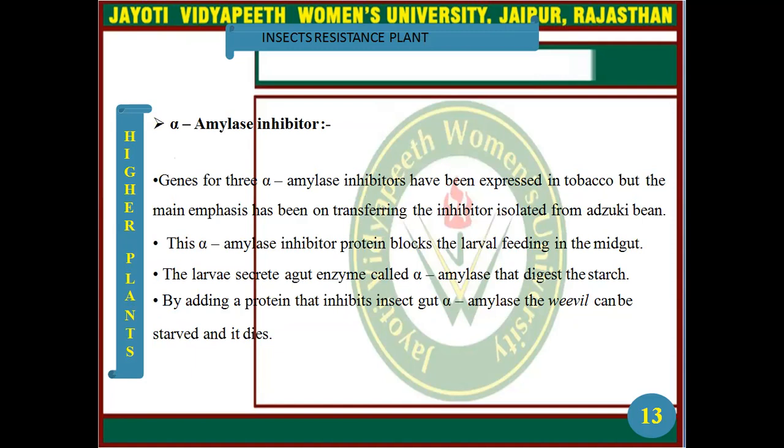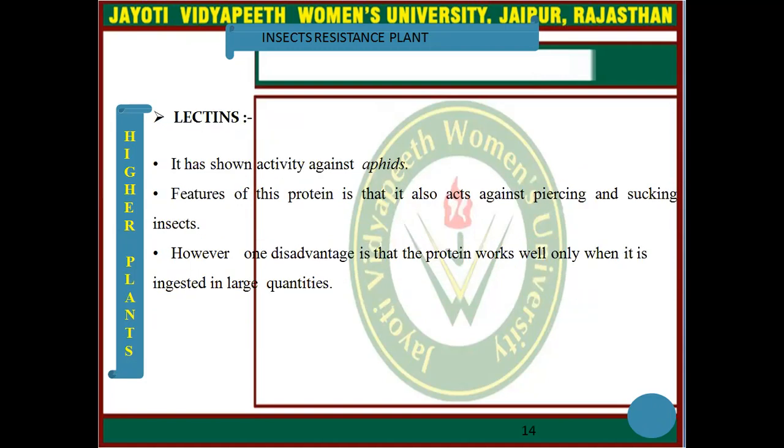The main emphasis has been on transferring the inhibitor isolated from a kidney bean. This alpha-amylase inhibitor protein blocks larval feeding. The larva secretes a gut enzyme called alpha-amylase that digests starch. By adding a protein that inhibits insect gut alpha-amylase, the insect can be starved and it dies.